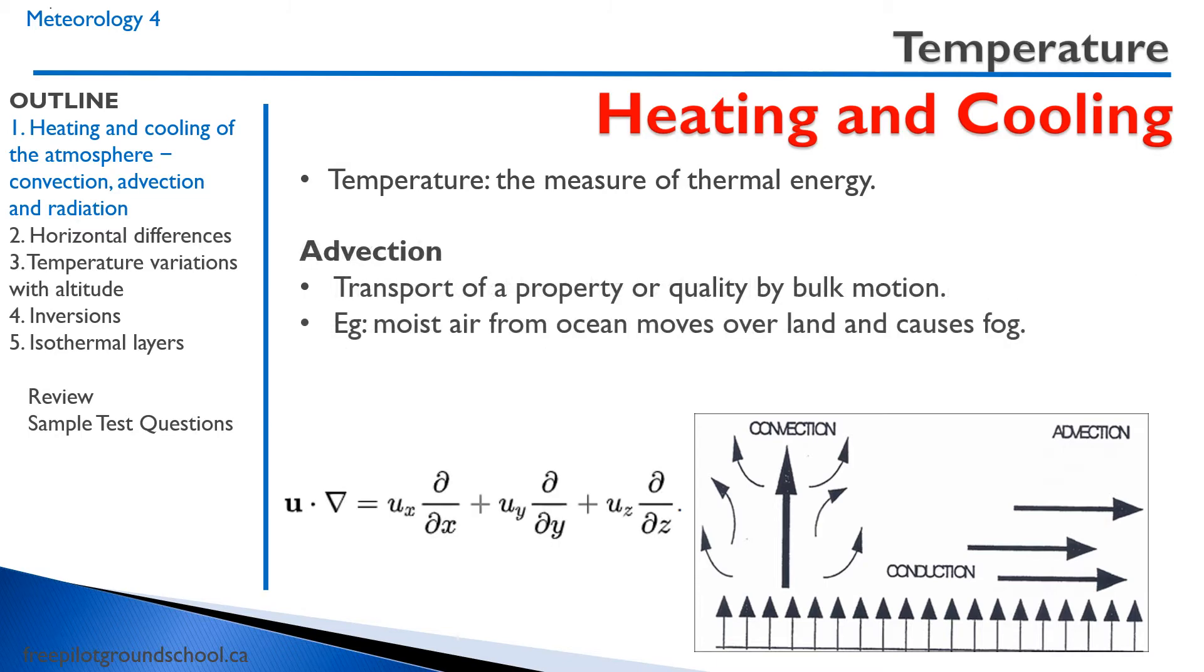Advection is the transfer of a property or quality by bulk motion. So for example, moist air from the ocean moves over the land and causes fog. There's a property, a high amount of moisture being moved by the bulk motion. Here's the equation, which you absolutely do not need to know, but this is the advection equation. I didn't even know there was an advection equation, but here's our differential equation.